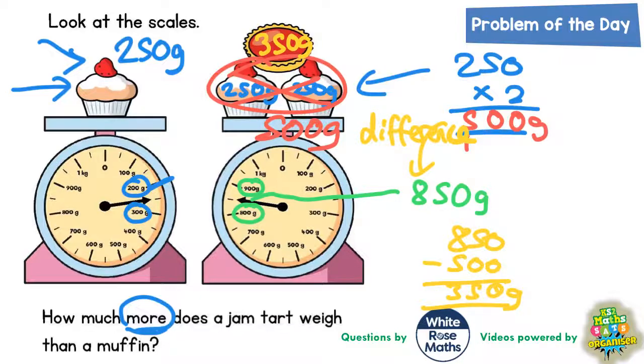This is still not the final answer to the question, because the question doesn't say how much does a jam tart weigh. The question asks how much more does a jam tart weigh than a muffin. Well, we seem to have worked out that a jam tart weighs 350 grams and a muffin weighs 250 grams, so we need to find out how much more is 350 than 250.